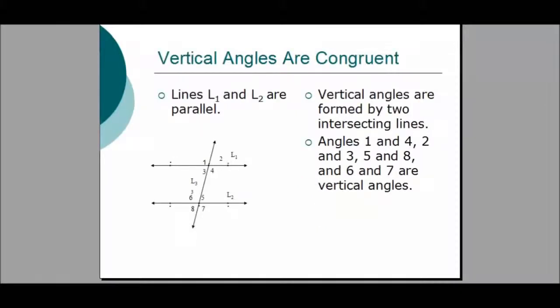Vertical angles are congruent. Vertical angles are formed by two intersecting lines. Angle 1 and Angle 4 are vertical angles and are congruent. Angle 2 and Angle 3 are vertical angles and are congruent. Angle 5 and Angle 8 are vertical angles and are congruent, as are Angle 6 and Angle 7.